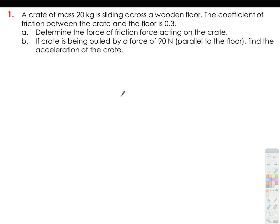For number one: a crate of mass 20 kilograms is sliding across a wooden floor. The coefficient of friction between the crate and the floor is 0.3. Letter A, determine the force of friction acting on the crate. And letter B, if the crate is being pulled by a force of 90 newtons parallel to the floor, find the acceleration of the crate.